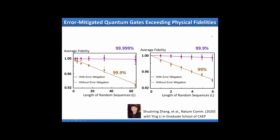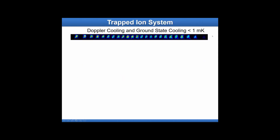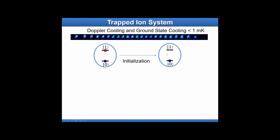Let me explain more about the trapped ion system and how we do computation. First, we hold individual atoms and cool them down to the millikelvin level using lasers. Unlike superconducting systems that cool the whole system, we only cool down the atoms. Each atom has a well-defined two-level system and we first prepare everything to the ground state — making everything zero.